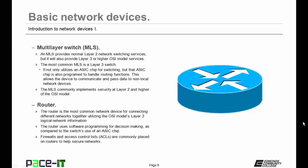The MLS commonly implements security at Layer 2 and higher of the OSI model. MLSs are not very common in small networks due to their expense. Then we have the router. The router is the most common network device for connecting different networks together, utilizing the OSI model's Layer 3 logical network information. Unlike the switch, which uses an ASIC chip, the router uses software programming for decision making. Firewalls and access control lists are commonly placed on routers to help secure networks.